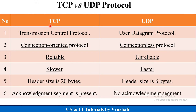TCP stands for Transmission Control Protocol and UDP stands for User Datagram Protocol. TCP is a connection-oriented protocol, meaning the sender first establishes a connection with the receiver before sending data. UDP is a connectionless protocol — it directly sends data to a particular system whether it is ready or not. TCP is a reliable protocol, providing assurance and guarantee that the receiver receives the data, whereas UDP is an unreliable protocol with no guarantee.